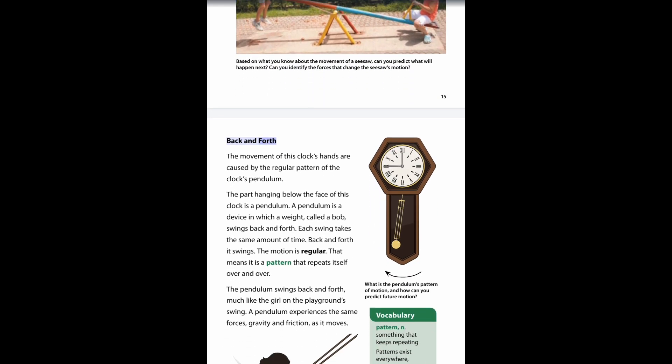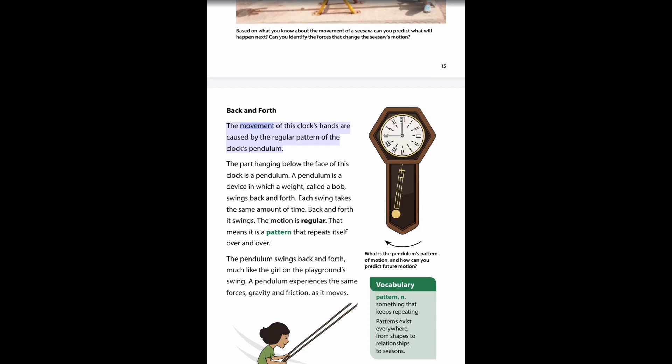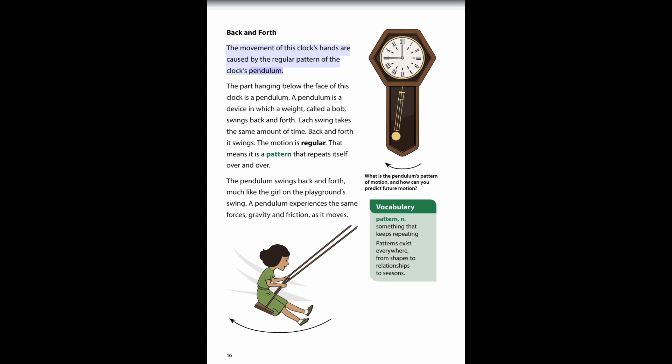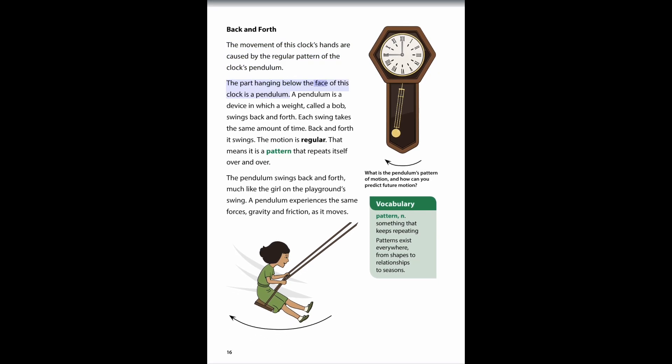Back and forth. The movement of this clock's hands are caused by the regular pattern of the clock's pendulum. The part hanging below the face of this clock is a pendulum. A pendulum is a device in which a weight, called a bob, swings back and forth. Each swing takes the same amount of time. Back and forth it swings. The motion is regular. That means it is a pattern that repeats itself over and over.